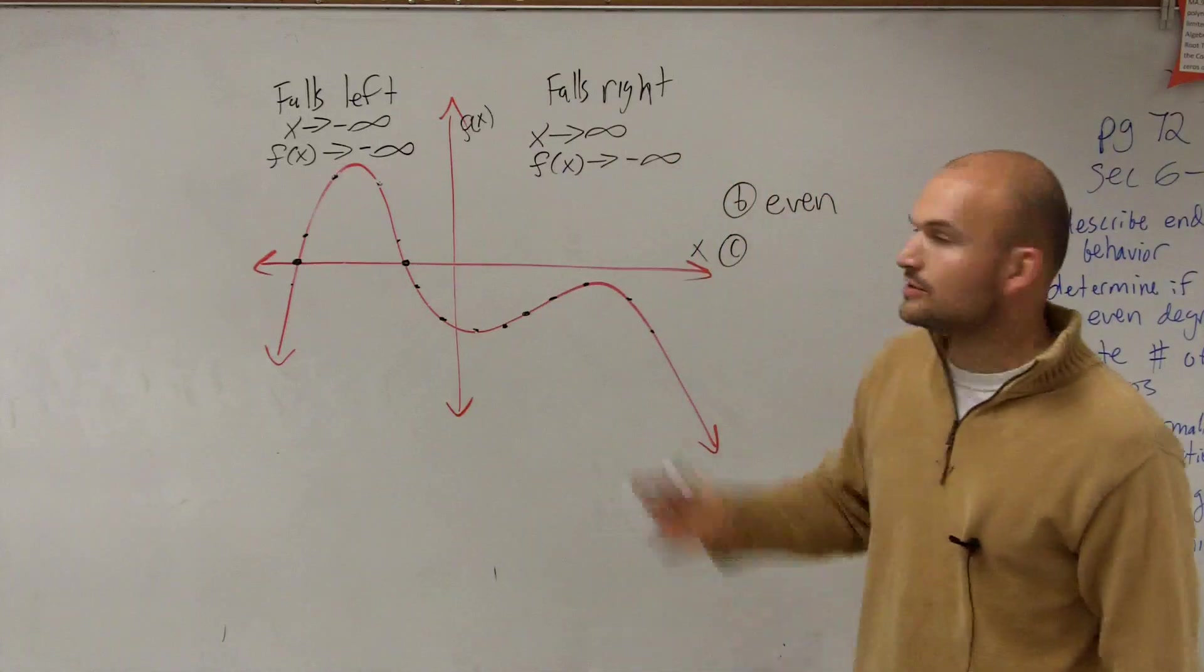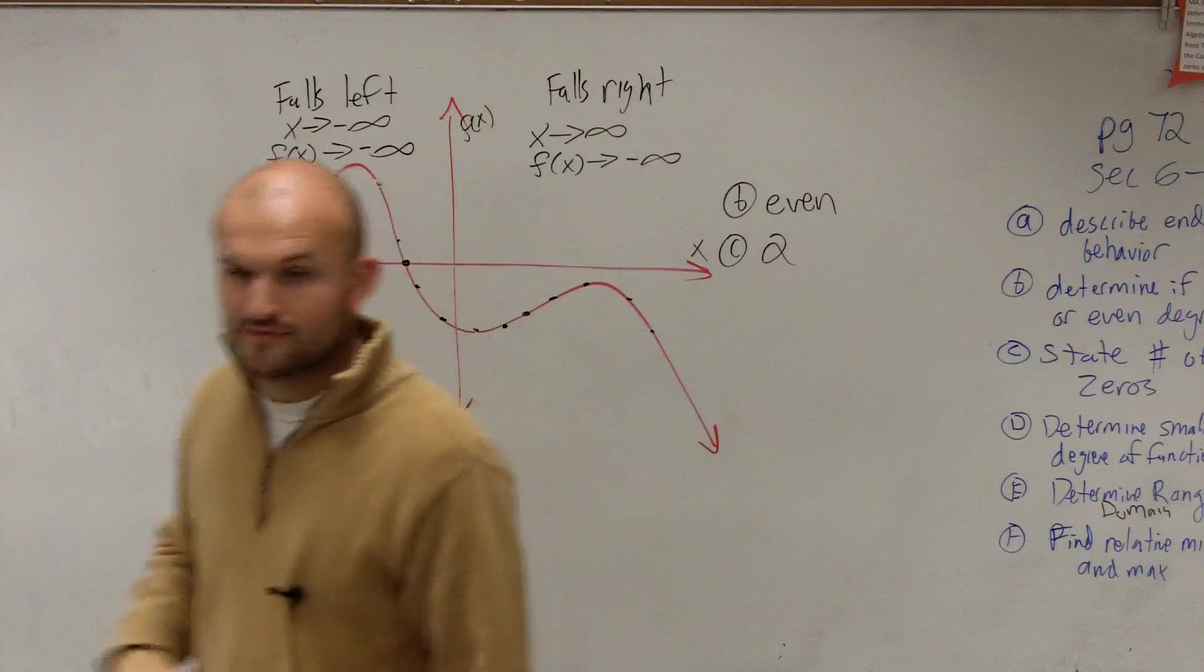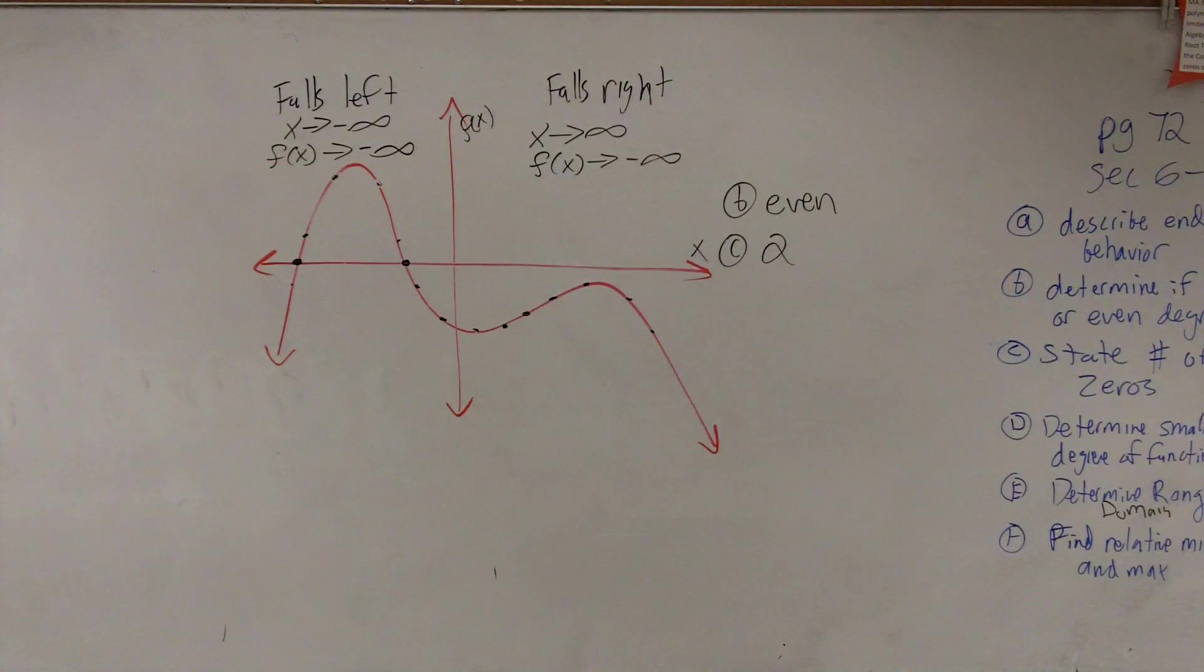And then C just says state the number of zeros, which in this case we have two. Done. So that's all you guys had to do for 35 through 40, is just look at the graph.